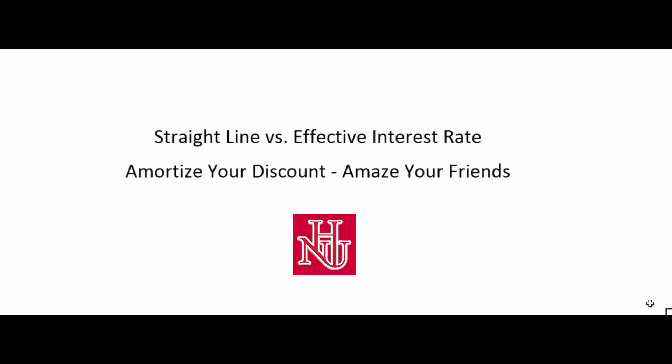Don't forget: GAAP says if there's a material difference between the straight-line method and the effective interest rate method, we have to use the effective interest rate method. Also, if it's a trading bond, you might not even bother amortizing the discount because you're buying and selling within a few days. But certainly if it's an available-for-sale or held-to-maturity bond, you're going to have to do some amortizing. Now you know how to do it — I hope that helps.